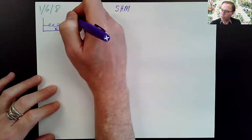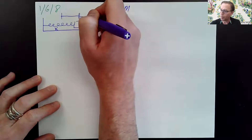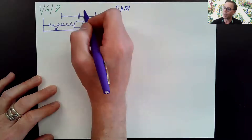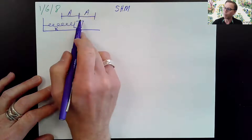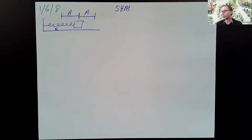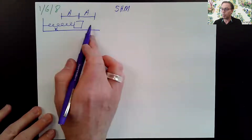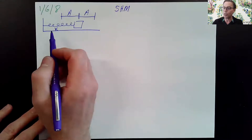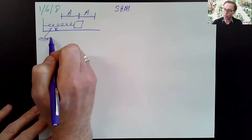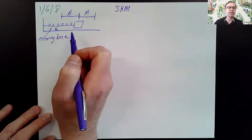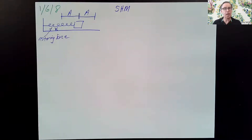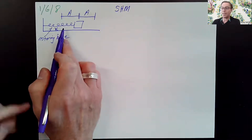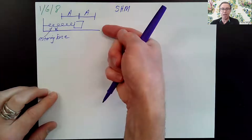The block will move from the center, which we call equilibrium. It'll move to the right of equilibrium, and then the same distance to the left, and back and forth. We call that distance from equilibrium A, the amplitude. This motion caused by a spring, caused by a restoring force, is simple harmonic motion. The direction of the force is always back toward equilibrium.